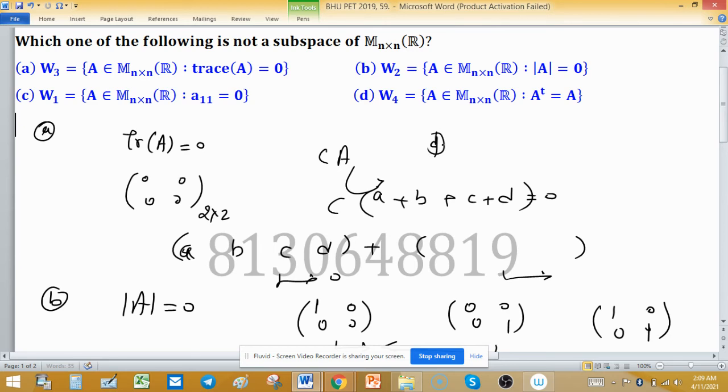Now come to option D. In W₄, we have the property A transpose equals A, meaning symmetric matrix. The sum of two real symmetric matrices is again symmetric. Scalar multiplication by any real scalar results in a symmetric matrix, and the zero matrix is also symmetric. So option D forms a subspace. The correct choice is only option B, where W₂ is not forming a subspace.